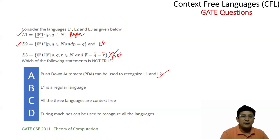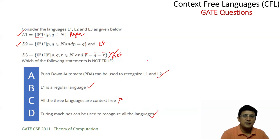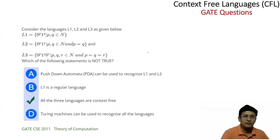A pushdown automaton can be used to recognize L1 and L2: L2 is context-free so a PDA applies, and L1 is regular which is a subset of context-free so a PDA works too. L1 is a regular language — yes. All three languages are context-free — this is false because L3 is not. A Turing machine can recognize all three languages — this is true, since any language (regular, context-free, or context-sensitive) can be accepted by a Turing machine. So option C is false, and since we are asked which is false, C is the answer. This was a GATE 2011 question.